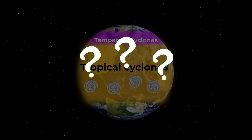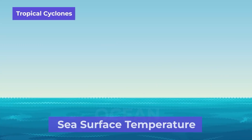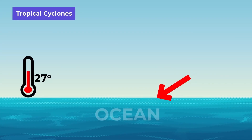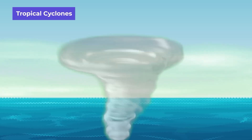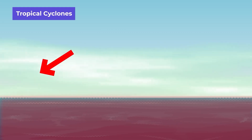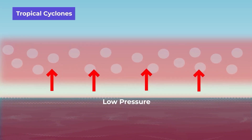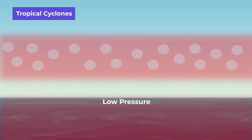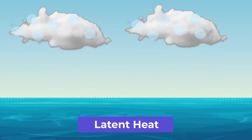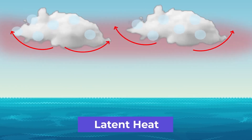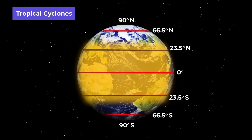Let us understand how a tropical cyclone forms. The first condition is sea surface temperature. The oceanic surface temperature should be above 27 degrees Celsius. This high temperature causes the water to evaporate, providing large amounts of moisture to the air. This hot oceanic surface warms the air above, which starts picking up moisture on its way. Due to the latent heat of condensation, the air further rises and warms more. A tropical cyclone develops on the ocean between 30 degrees north and south, where the sun's rays are direct and the temperature is higher.